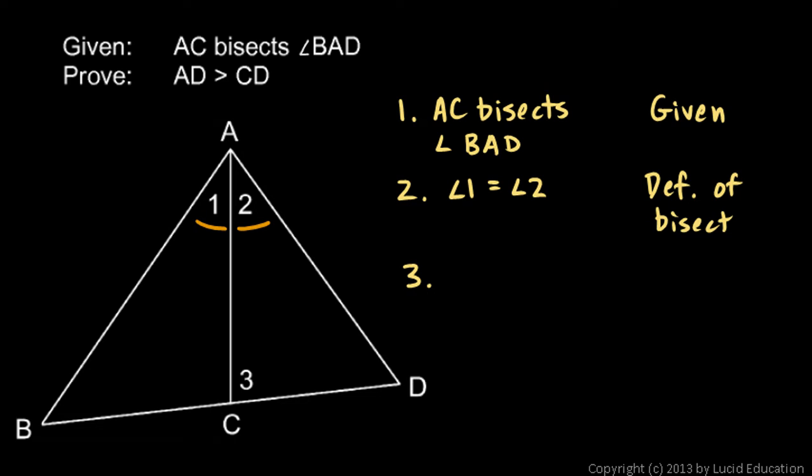Then for step 3, we said that this angle down here, angle 3, has to be larger than angle 1 because angle 3 is an exterior angle. And the exterior angle theorem says that an exterior angle of a triangle is greater than either remote interior angle. So I'll say that angle 3 is greater than angle 1, and that's based on the exterior angle theorem.